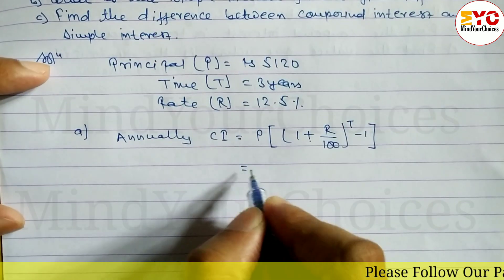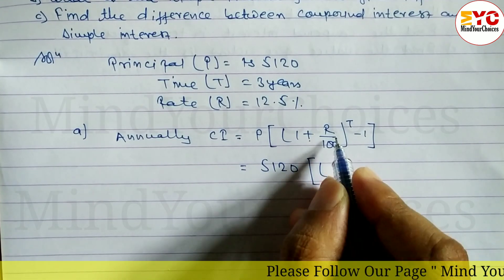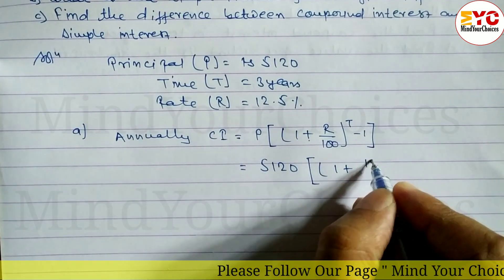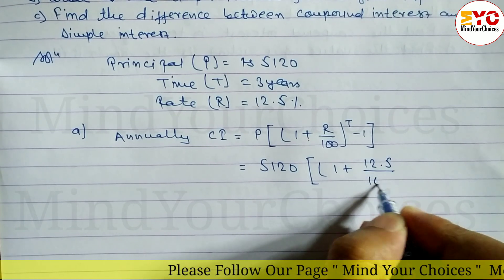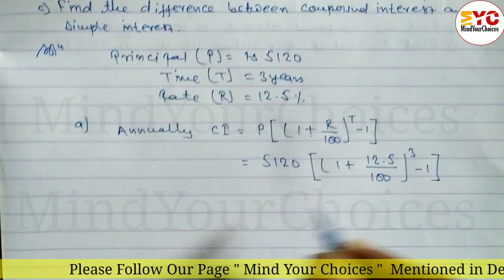The value of P, the principle, is 5,120. Then 1 plus R, which is 12.5 divided by 100, power T. T becomes 3, minus 1. After that, you calculate this.